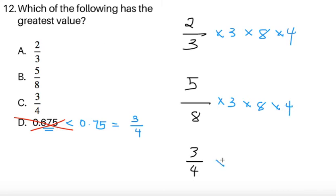And then we compare the values. So if I do that, the first one: 2 thirds times 3 times 8 times 4, you can cancel out the 3. So it's just 2 times 8 times 4. You can work out the math. 8 times 4 is 32. So this is 64.